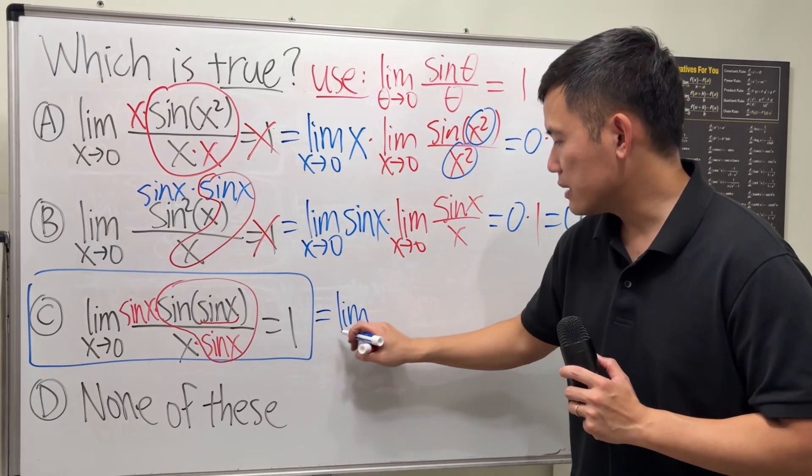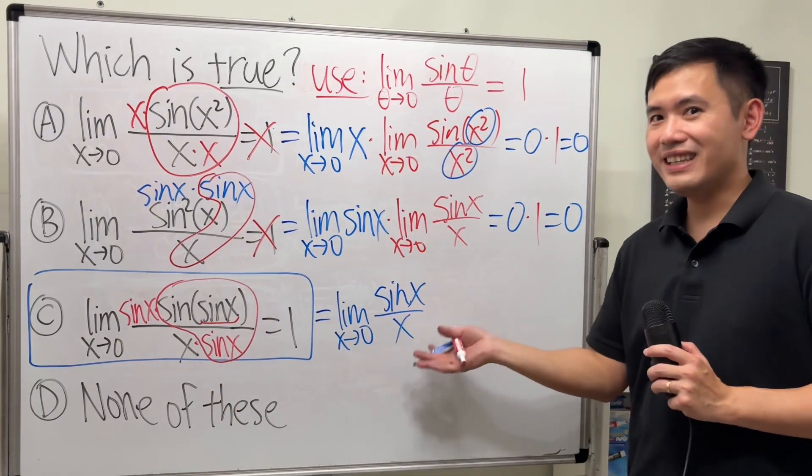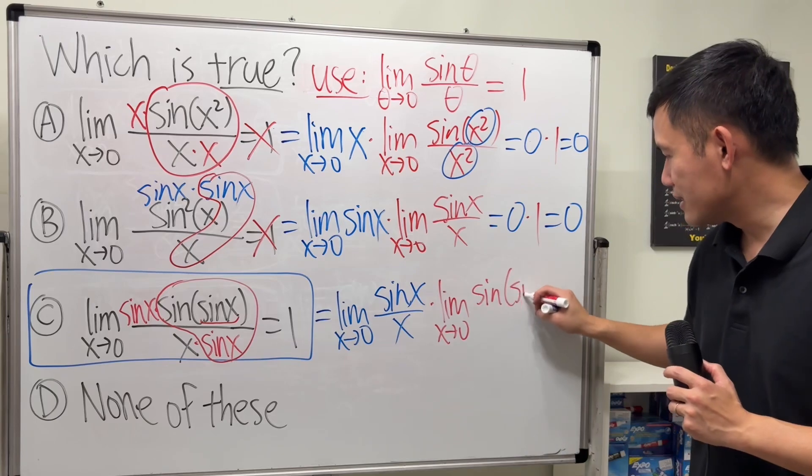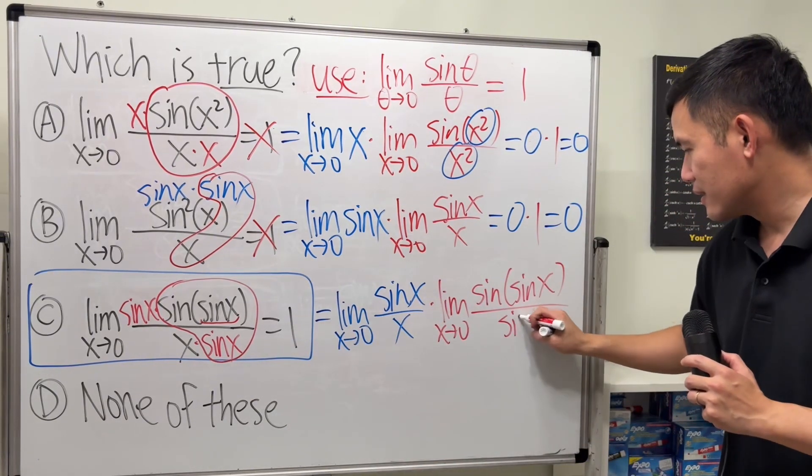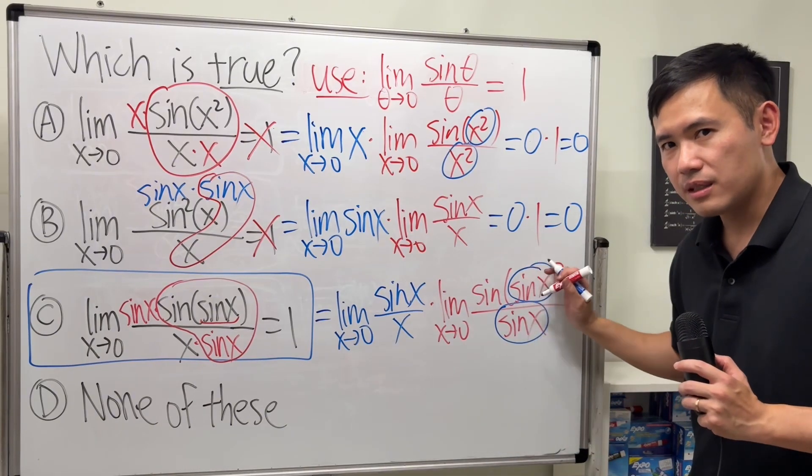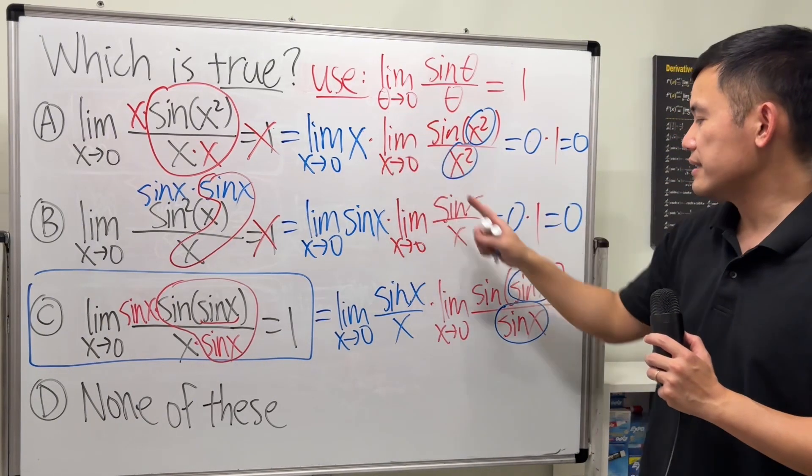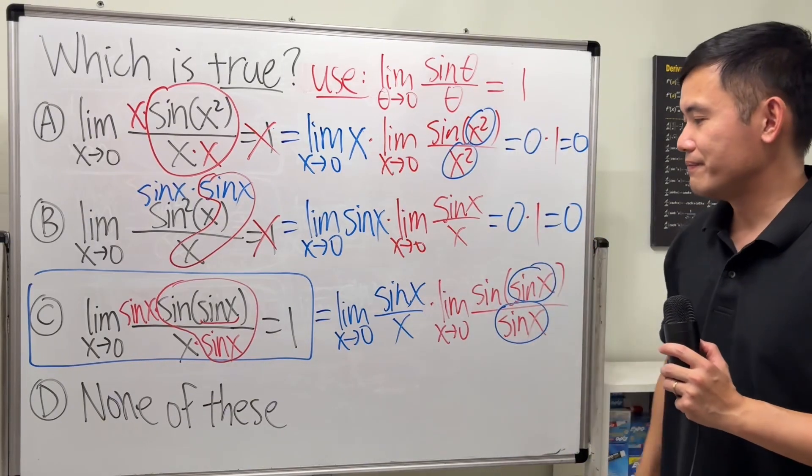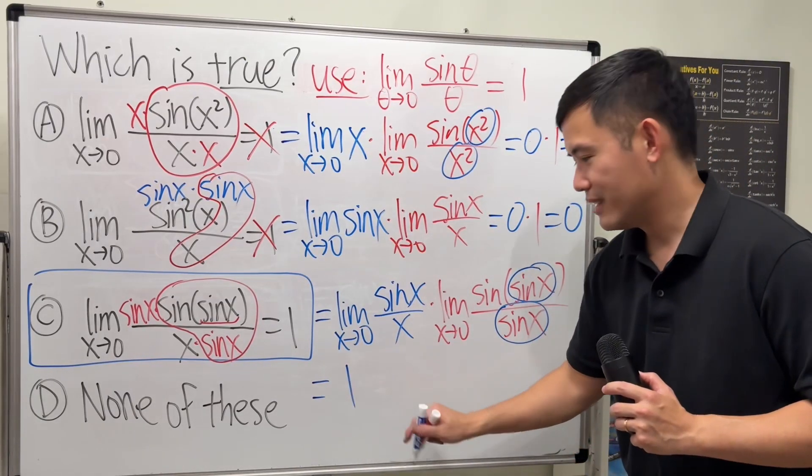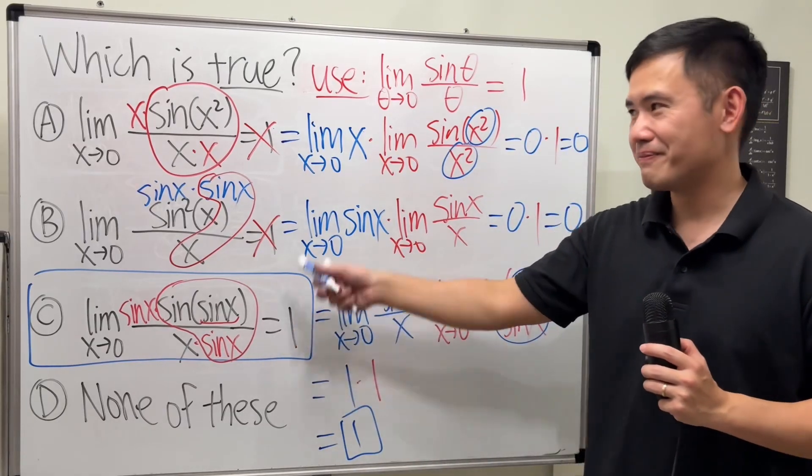So, we will have the limit as X approaching 0, sine X over X. Aha, we see it, huh? I know you guys see it too. And then we multiply by the limit as X approaching 0, sine of sine of X over sine of X. As you can see, the input match. And as X approaching 0, sine of X approach 0. So, this right here, once again, you can write it out. If you want to be more rigorous, you can say theta is equal to sine X. And you can see this will match the same form. This is exactly that. X and theta, pretty much the same thing. So, this is 1. This is another 1. 1 times 1. It's not 2. It's 1. That's why the answer is 1. Just like that.